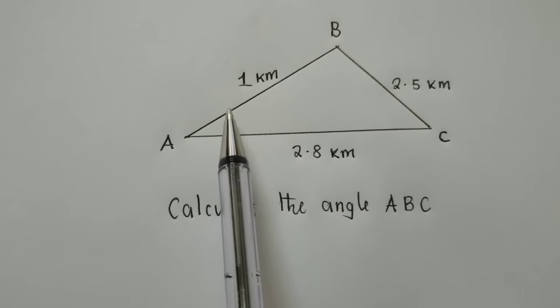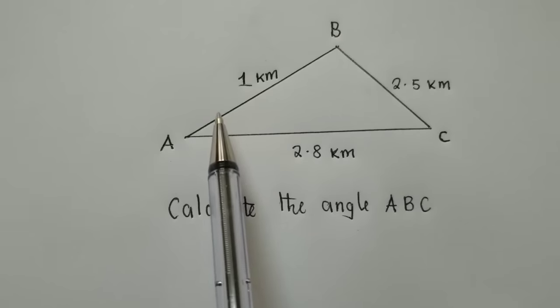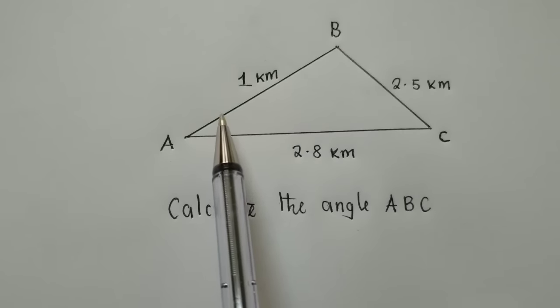Once you discover that you're given all the sides, just go for cosine. It means for you to find the angle, you need to use cosine rule.